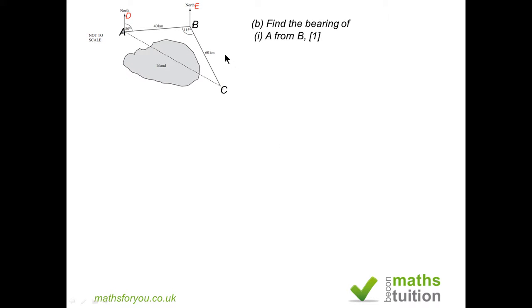We are asked to find the bearing of A from B, the bearing of A from B. A few things to note: because AD is pointing north and BE is also pointing north, therefore AD and BE are parallel.